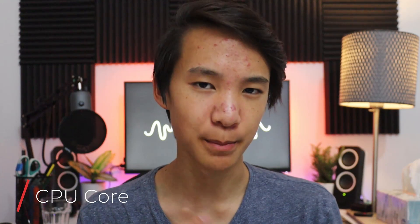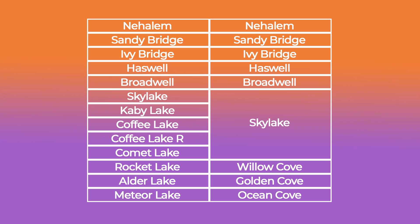The fourth and, in my opinion, most important way of classifying Intel Core i desktop CPUs is the core — the physical silicon on the CPU die. For generations one to thirteen there are nine core architectures total. First gen used the Nehalem core, second gen Sandy Bridge cores, third gen Ivy Bridge cores, fourth gen Haswell cores, fifth gen Broadwell cores, sixth through tenth gen Skylake cores, eleventh gen Willow Cove cores, twelfth gen Golden Cove cores, and thirteenth gen is speculated to use Ocean Cove cores.